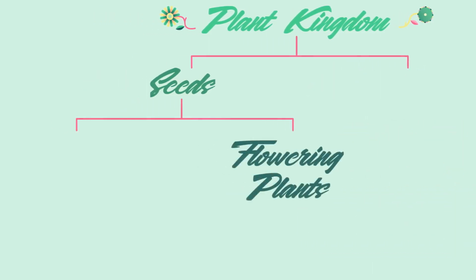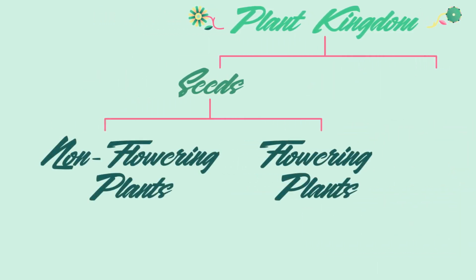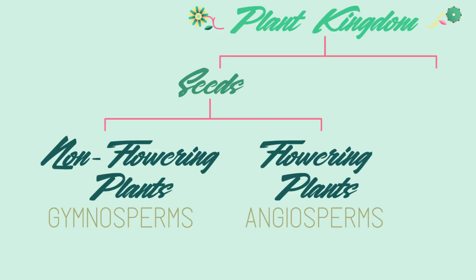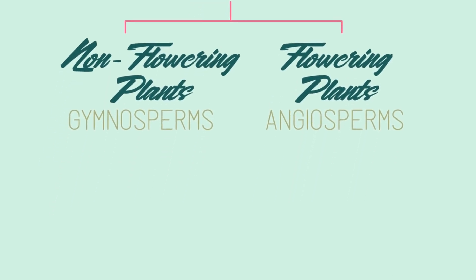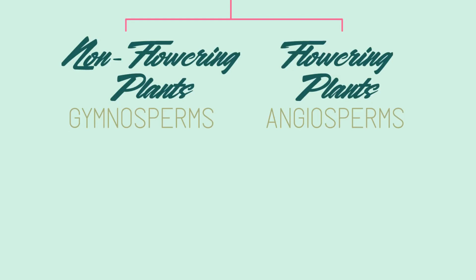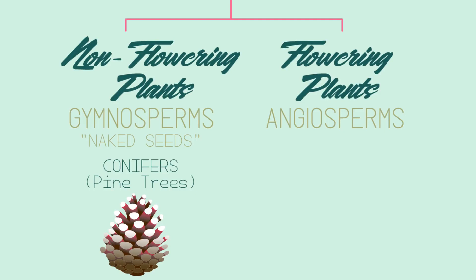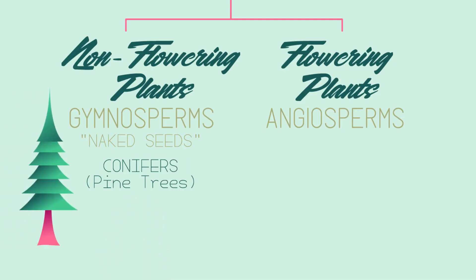Seed plants can be split into flowering plants and non-flowering plants, with scientific names of angiosperms and gymnosperms. Non-flowering plants do not produce flowers and are reproduced by means of exposed seed or ovule — gymnosperm means naked seed. Like conifers, the cone on a pine tree is a naked seed. Gymnosperms are usually tall, evergreen trees, often with needle-shaped leaves, and are usually found in dry places.